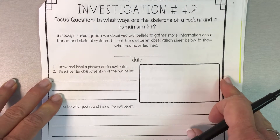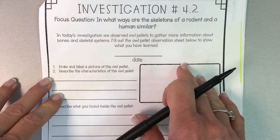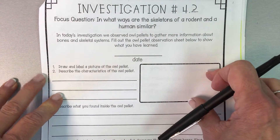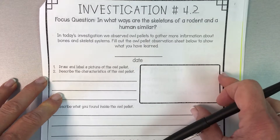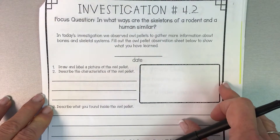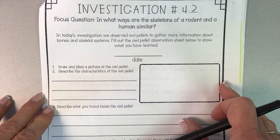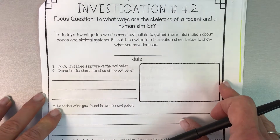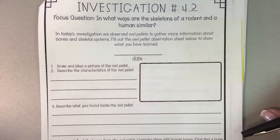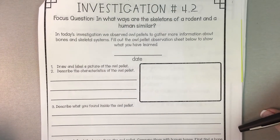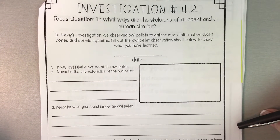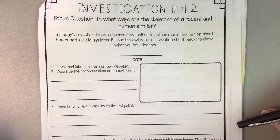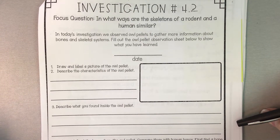In the video you saw how I dissected the owl pellet and what the owl pellet looked like before I dissected it, before I broke it apart and pulled it apart. What did that owl pellet look like? If you need to go back to the video and look at the beginning, you can do so. Pause the video now and talk to your friends about what the characteristics of the owl pellet were.